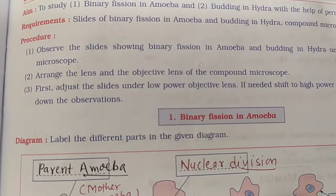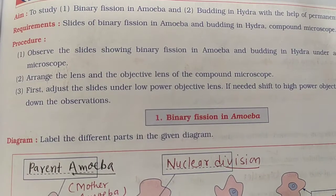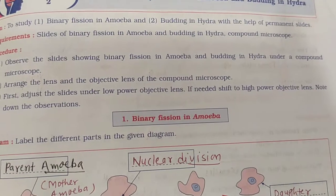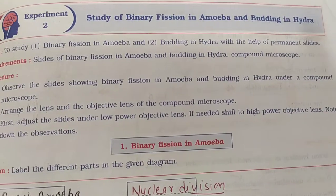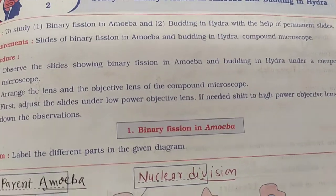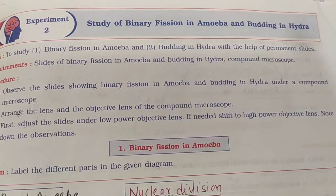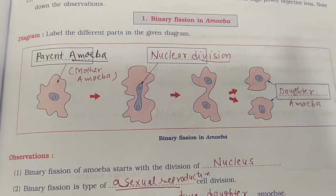Adjust the slide under the low power objective lens. If needed, shift to the high power objective lens. Note the observations.